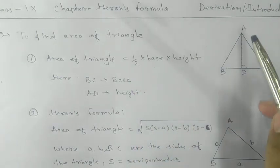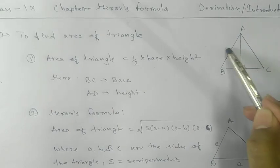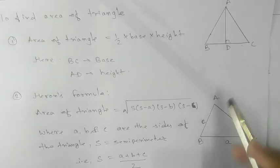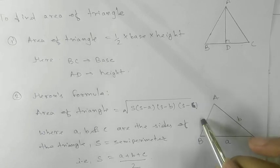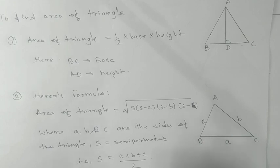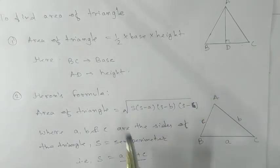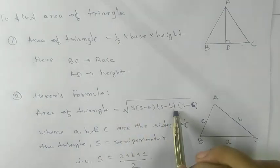But if the height is not provided and only the side lengths are given — like in this triangle where the sides are 5 cm, 4 cm, and 3 cm — and you need to find the area, then you cannot apply that formula. So we have another formula called Heron's formula.